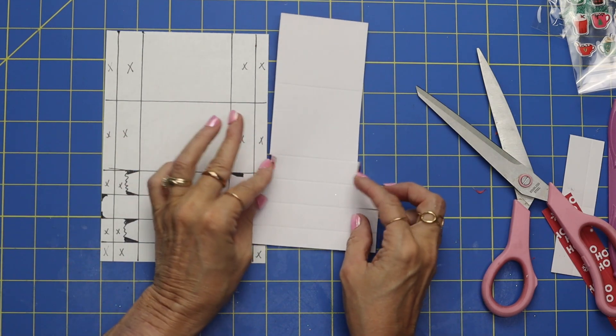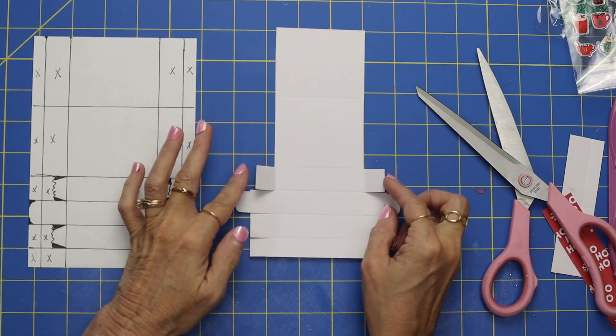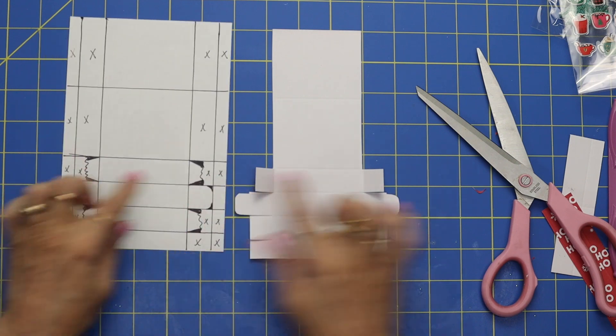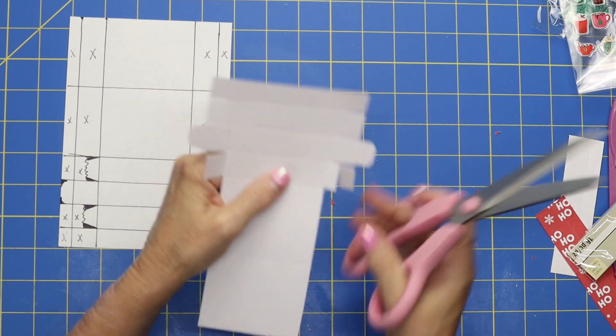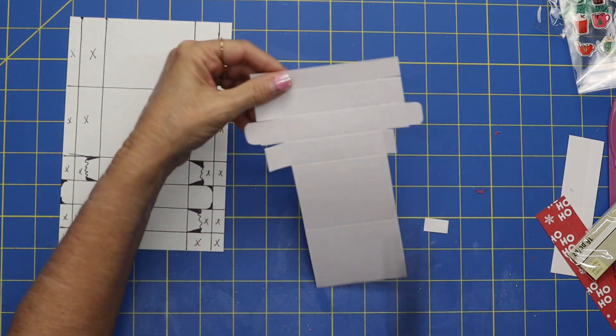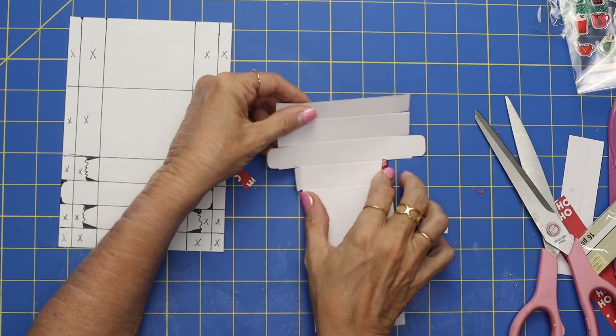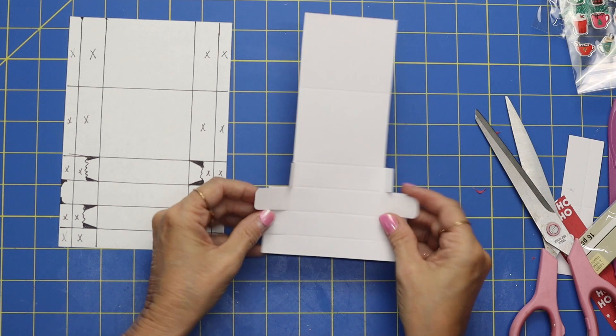Now on this part right here we're just going to cut about half of that off. Do you see how I have little squiggly lines right here? We just want to cut about half of it off. Don't have to measure, just eyeball it. We're just getting rid of some of that bulk. So about half of it. So now those little squares are shorter.